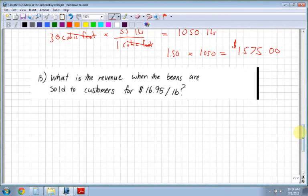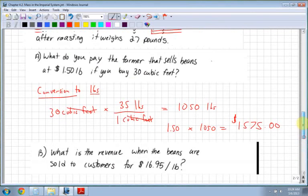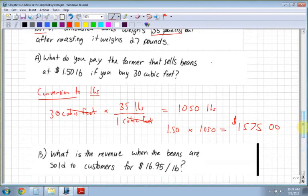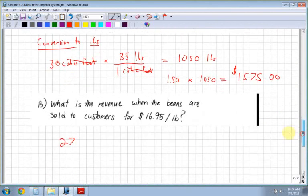So $1,575 to buy 30 cubic feet of unroasted beans. Now the next question, what is the revenue when the beans are sold to customers for $16.95 per pound? So the first thing I need to do here is figure out what I have here.